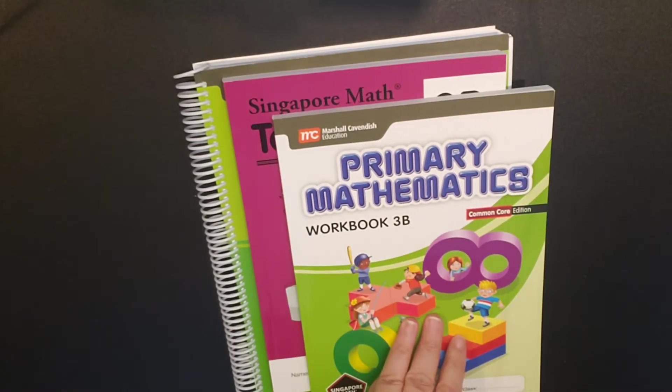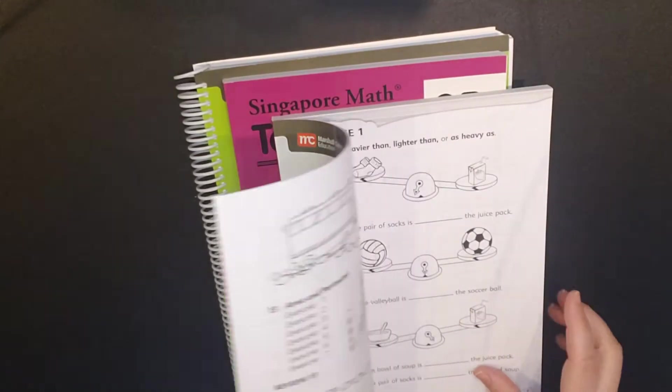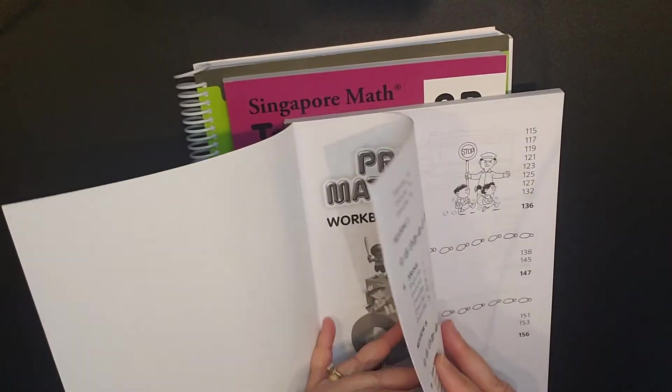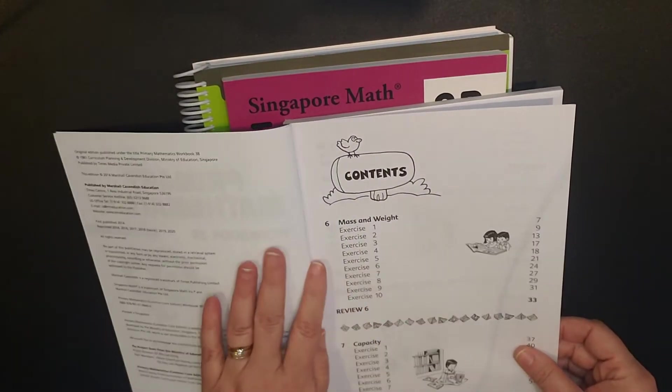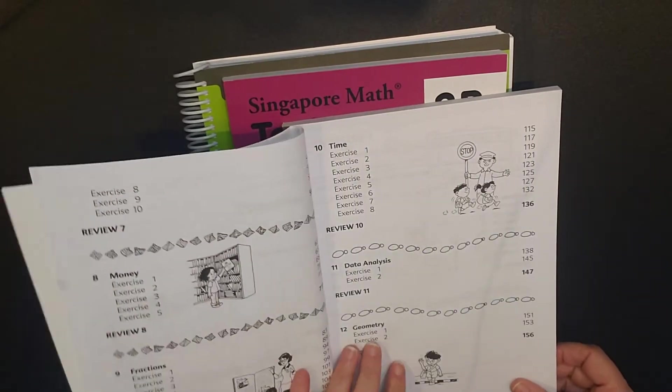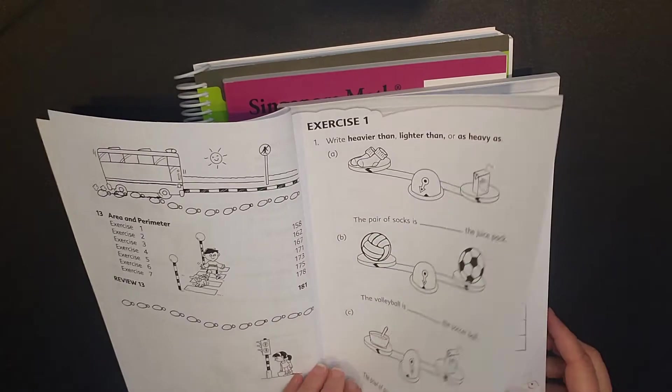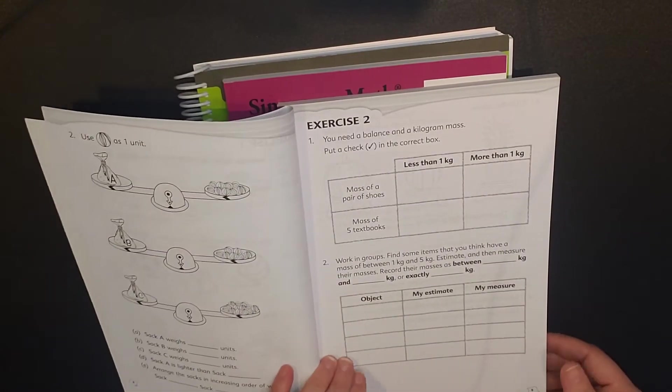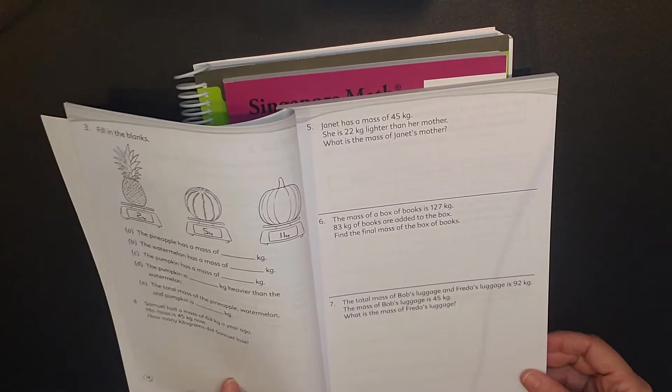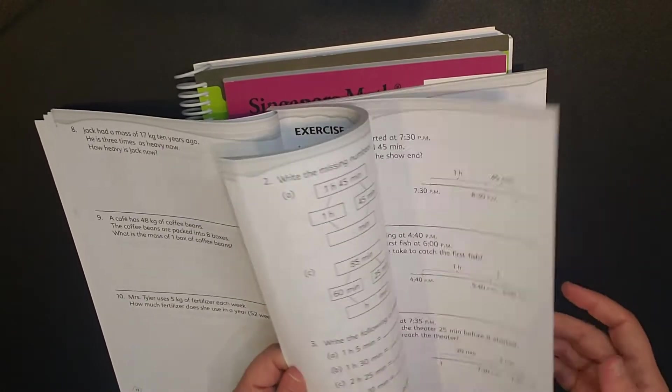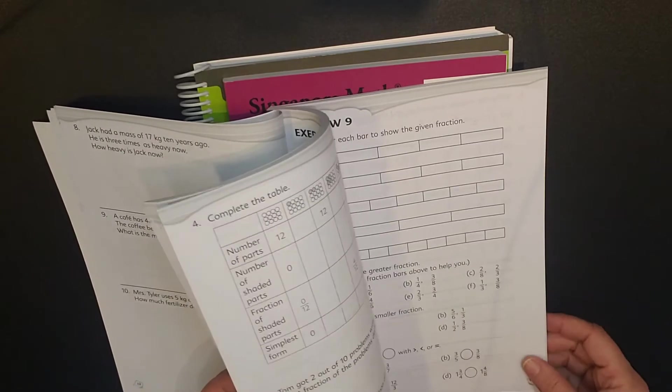So this is where once the student understands the concept from the textbook, the workbook provides additional practice. Now the workbook is not in color. You can see that there's just a few problems on the pages, and so it's truly a workbook.